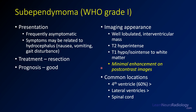In this case we're looking at a subependymoma. These are WHO grade 1 intraventricular tumors arising from the subependyma. They are frequently asymptomatic, but patients can develop hydrocephalus, which can cause gait disturbances, nausea, and vomiting. The treatment is resection, and they have a great prognosis.